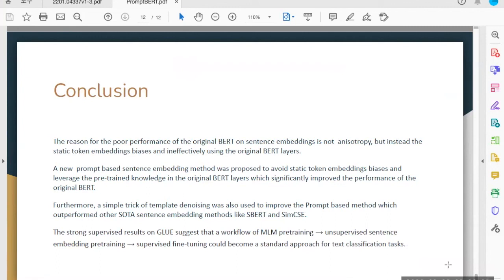It also gives a direction where in the future for sentence classification or text classification tasks, the following workflow can be used: mask language pre-training followed by unsupervised sentence embedding pre-training, that is pre-training the BERT model again on the in-domain data or target task data, and then perform normal supervised fine-tuning. This could become the standard approach for text classification in the field.